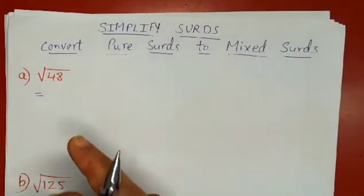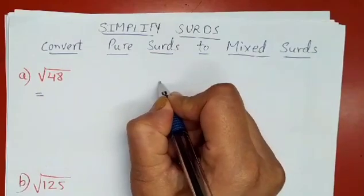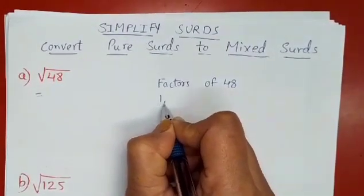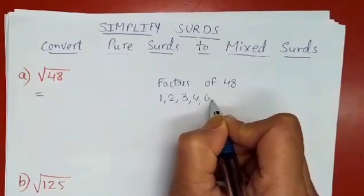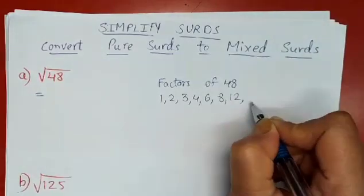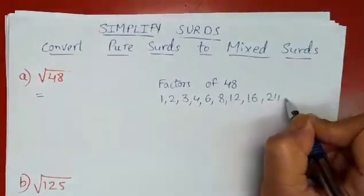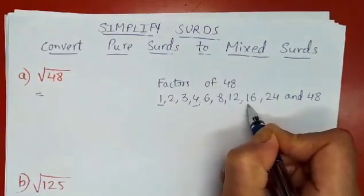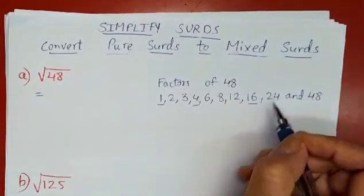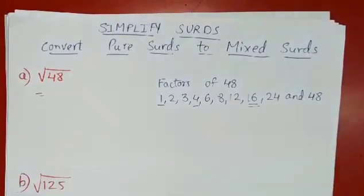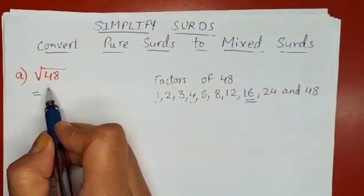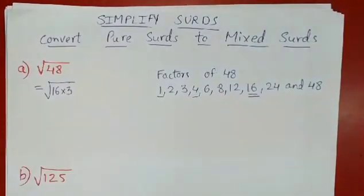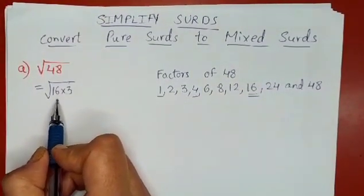Let us take an example. If you write factors of 48, we get 1, 2, 3, 4, 6, 8, 12, 16, 24, and 48. Now out of all these factors, 1, 4, and 16 are perfect square numbers, and 16 is the largest perfect square number. So here we have to express 48 as a product of 16 and 3, as 16 is the largest perfect square number among the factors of 48.